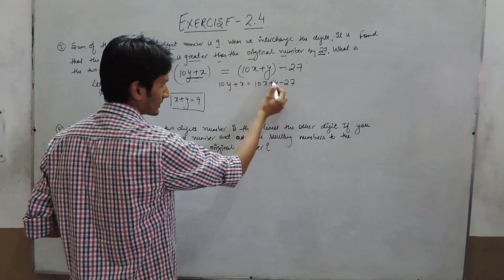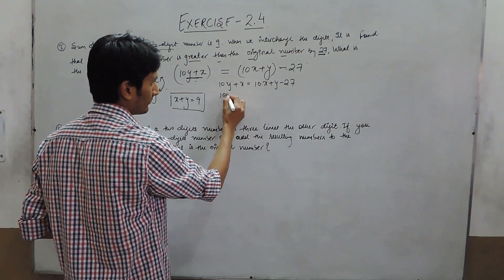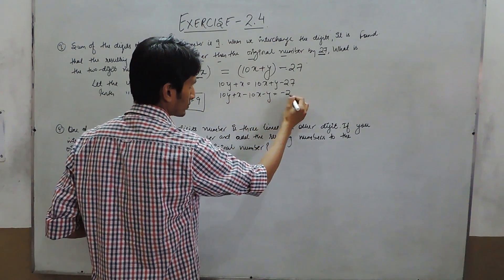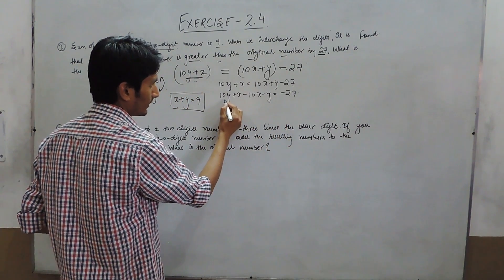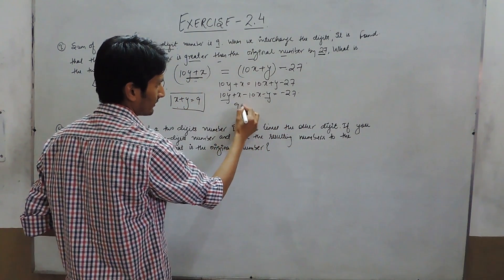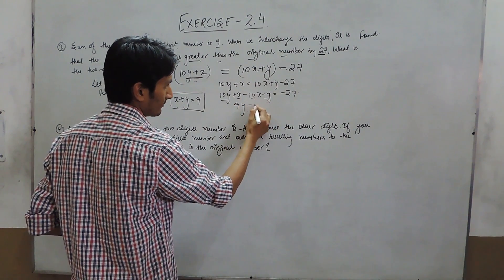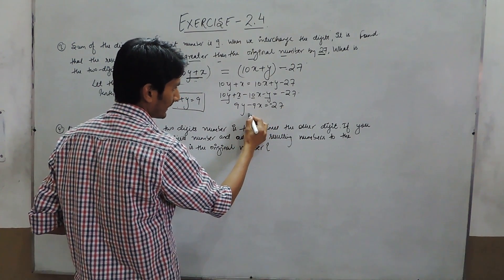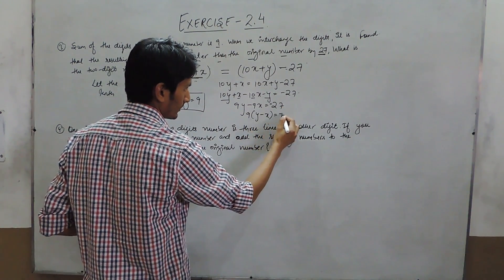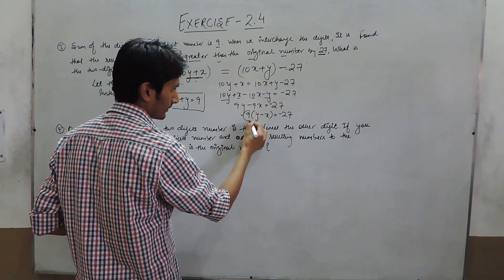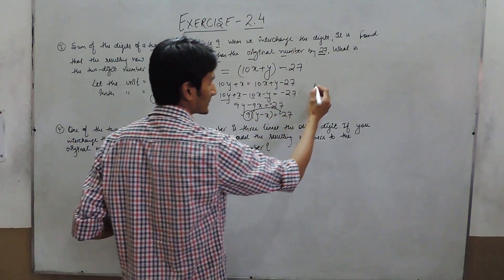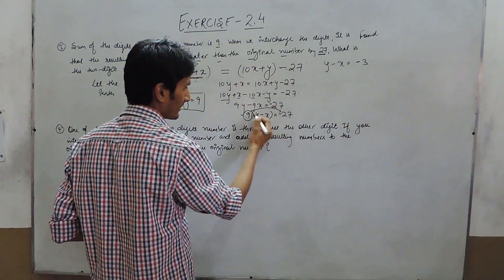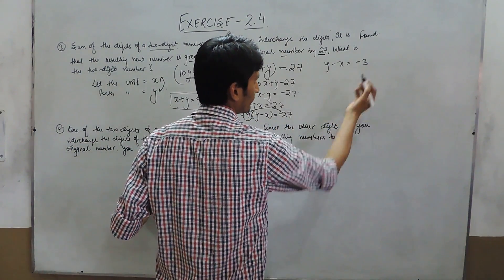Bringing everything to one side: 10y plus x minus 10x minus y equals minus 27. This gives 9y minus 9x equals minus 27. Taking 9 as common and dividing both sides by 9, we get x minus y equals minus 3. Because 27 divided by 9 gives 3.